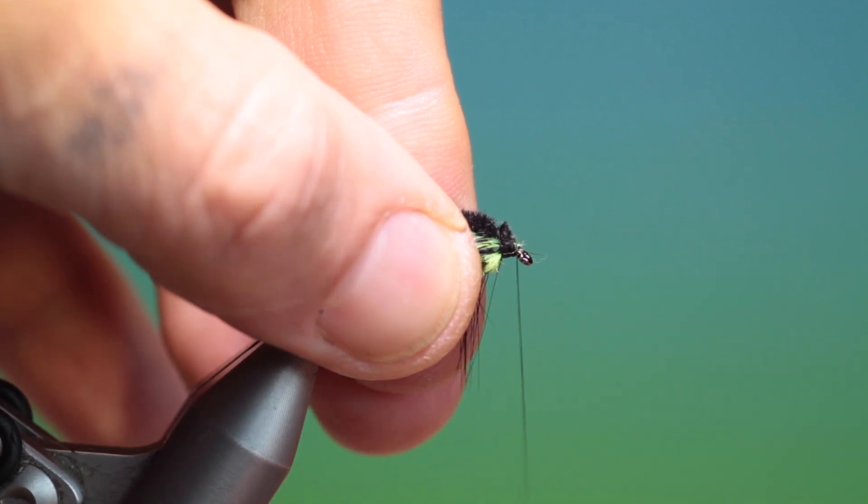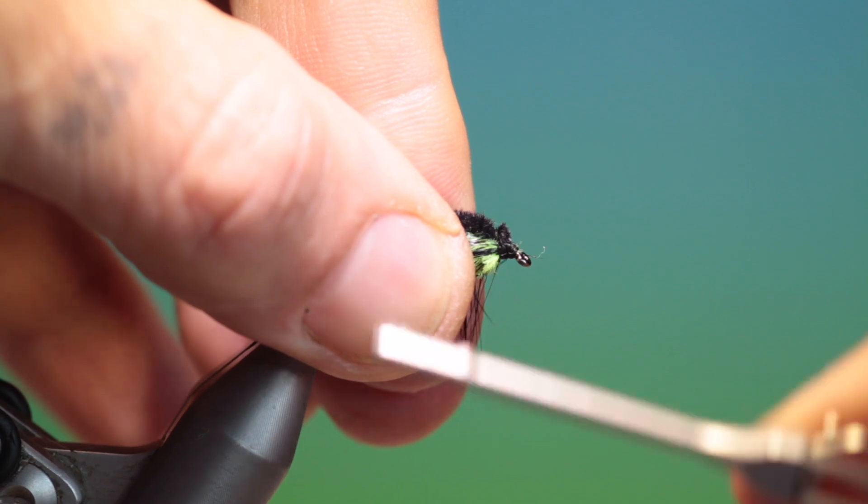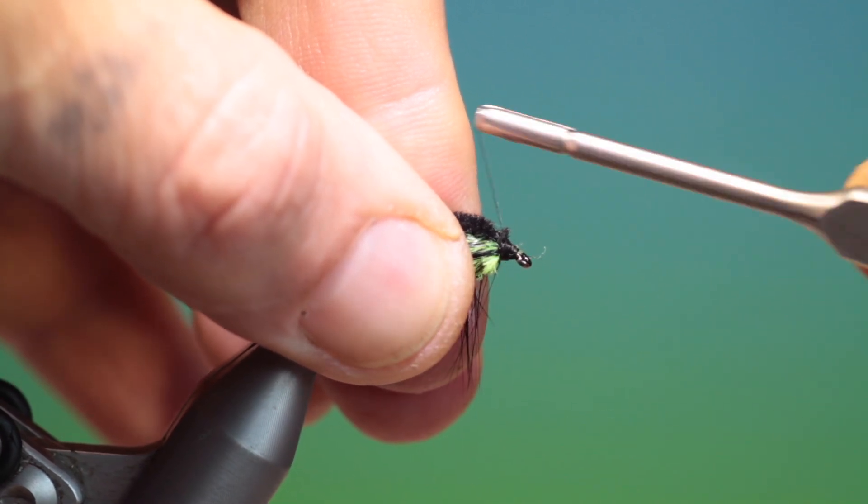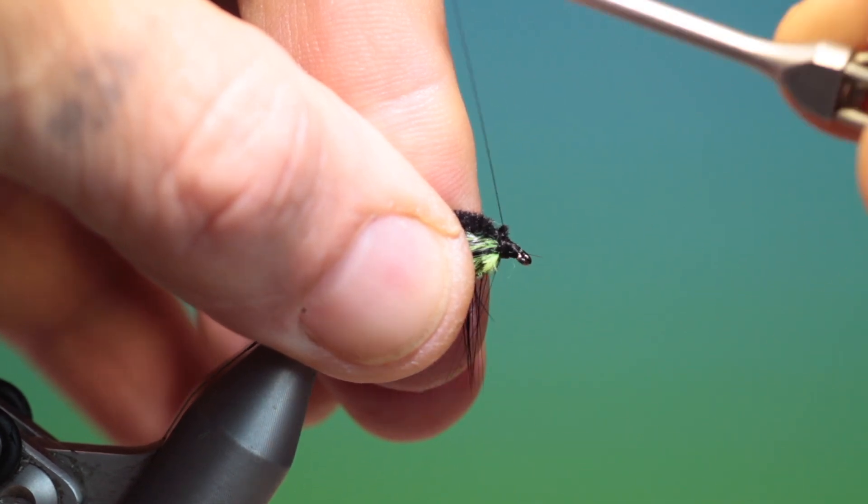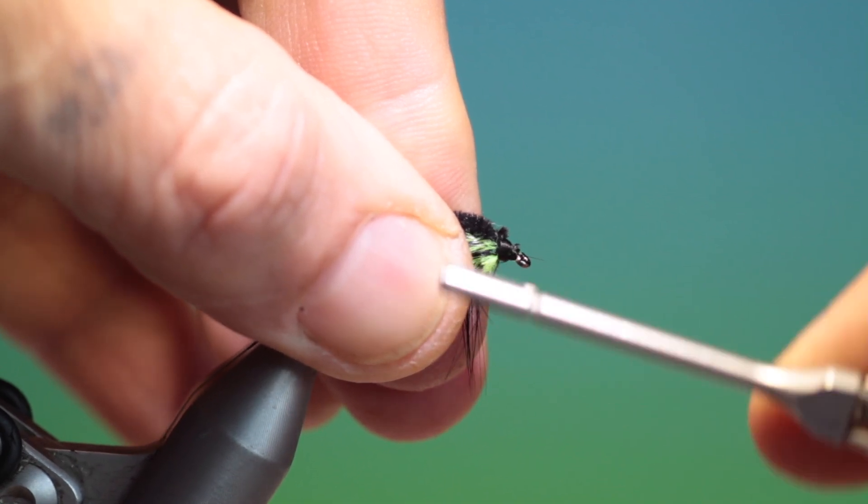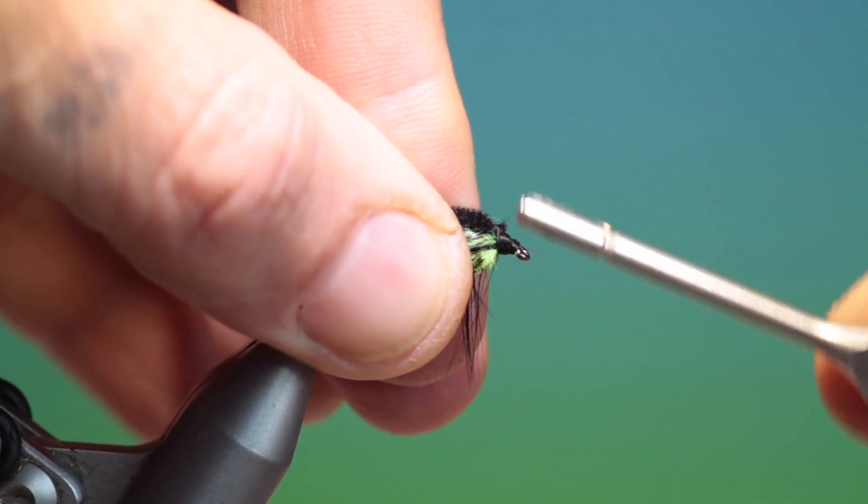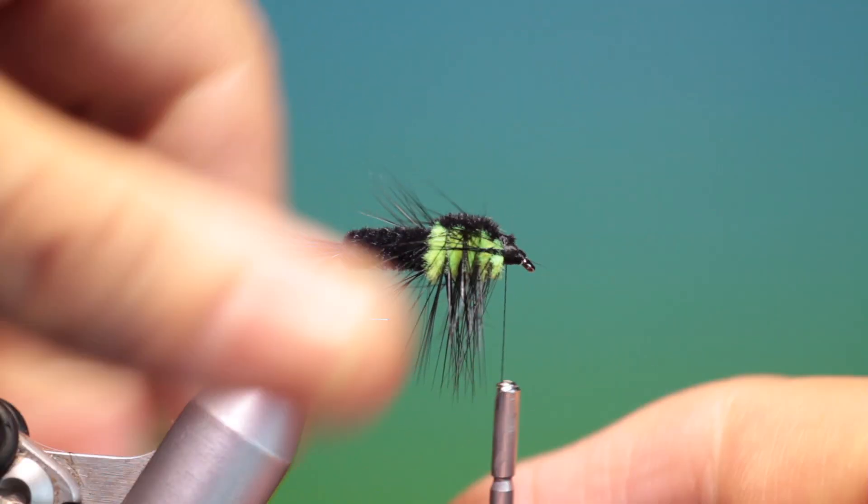Pull everything back, give my tying thread a spin to the left to flatten it. Start at the hook eye, work our way up, building up a head. That's good.